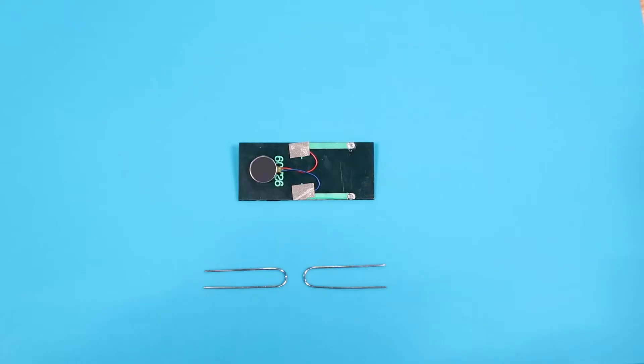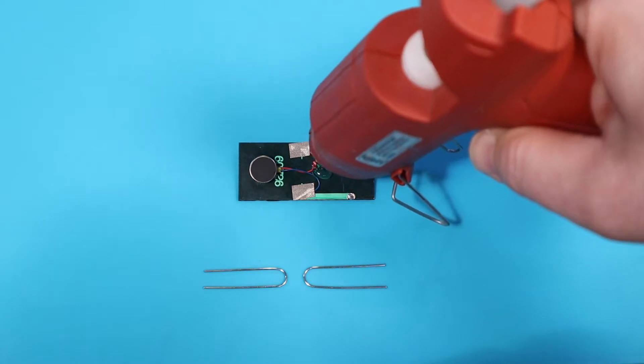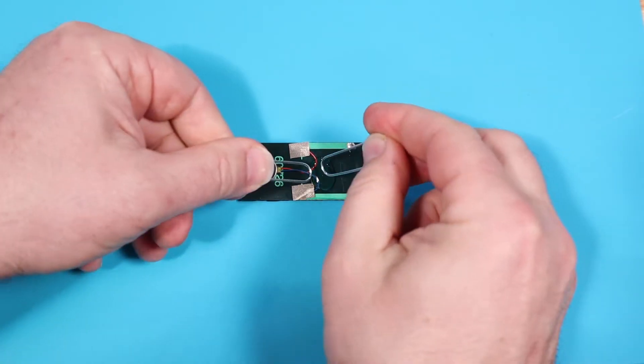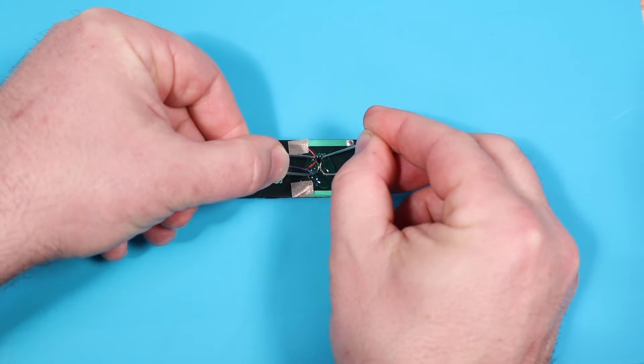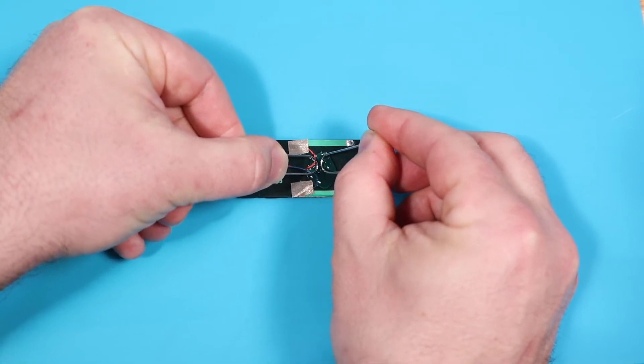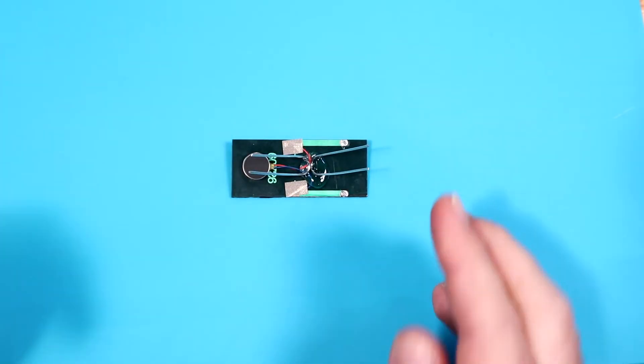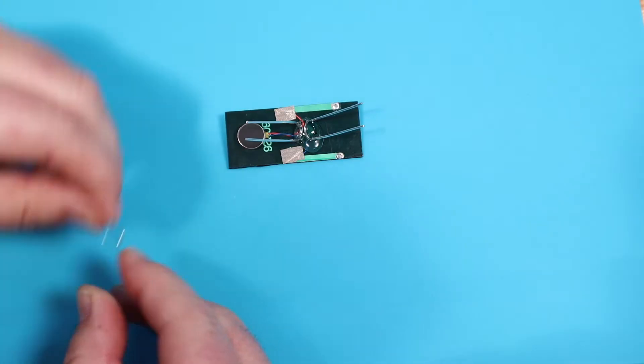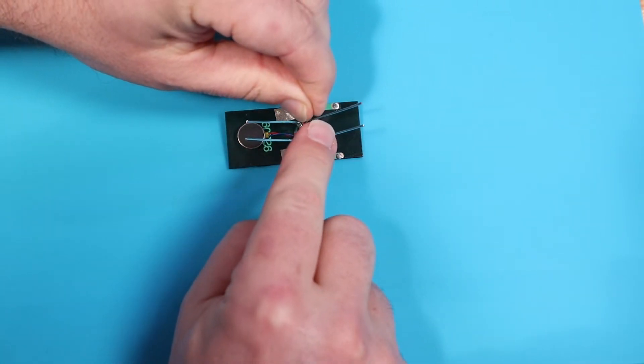One easy way to attach the legs to the body is to put a blob of hot glue on the solar cell and then push in two pairs of legs and wait for the glue to cool. Now that the first two sets of legs can stand on their own, get the third set and push it into the glue.